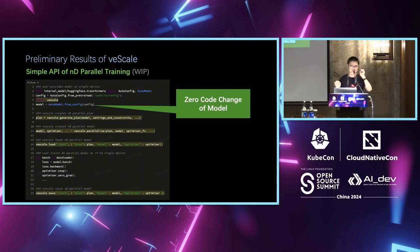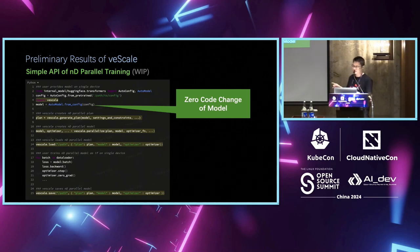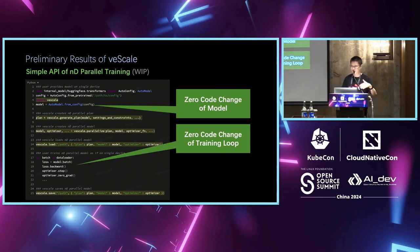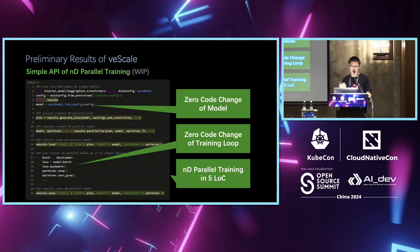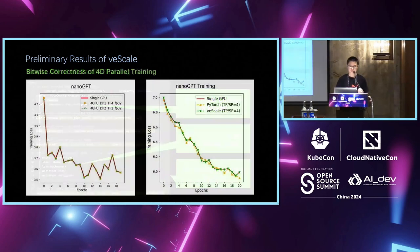We currently provide APIs that allow users to manually configure the parallelization plan. The parallelized API is ready and finishes deployment based on the generated plan. For the training loop, no code changes are needed. In total, you can run N-D parallelized training plus handle checkpoint save and load with just five lines of code.